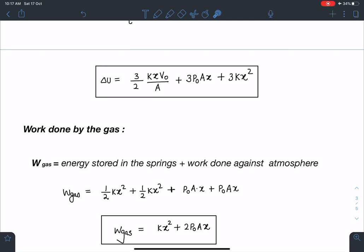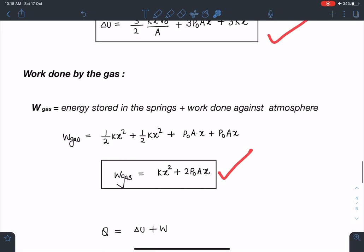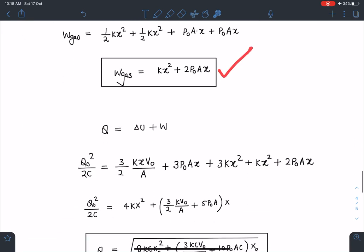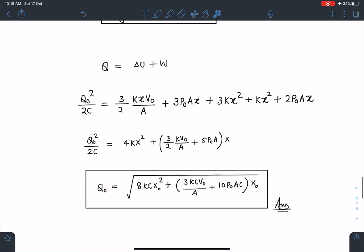Similarly other side also it is pushed by a volume of Ax, pressure is constant, so directly I can write this work done as P0 Ax plus P0 Ax, which is 2 P0 Ax. Now I have this delta U and I have this W_gas, so I'm going to use first law of thermodynamics and I'll be substituting these values. And if we simplify, we are going to get this Q0 is equal to root of 8 Kc x0 squared plus 3 KcV0 by A plus 10 P0 Ac times x0.